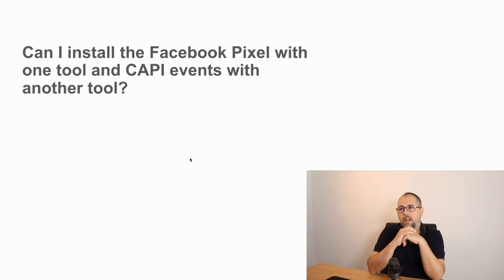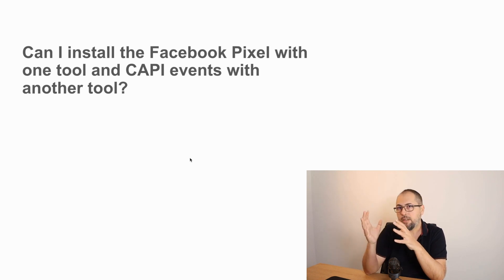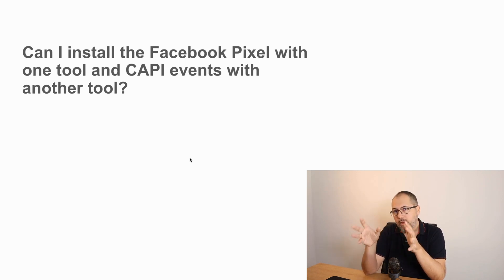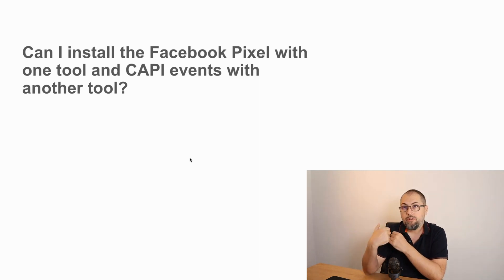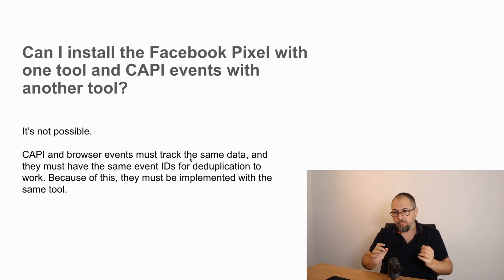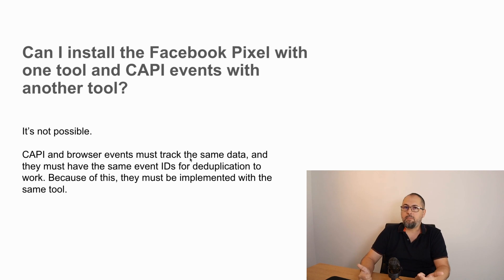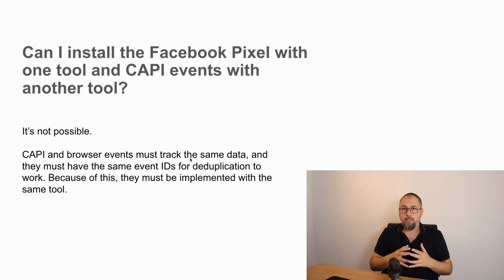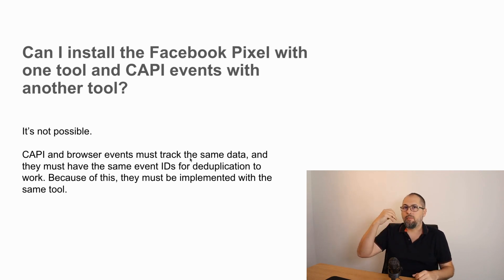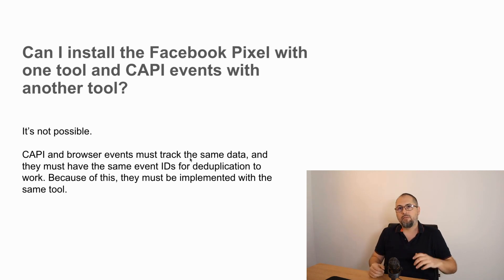Can I install the Facebook Pixel with one tool and Conversion API events with another tool? A lot of people ask: 'I have Google Tag Manager on my website and install the Facebook Pixel with it — can I use your plugin Pixel Your Site to add just Conversion API events?' This is not possible. A Conversion API event must track the same data, have the same event name, and send the same event ID as the Pixel events for deduplication to work. Because of this, they must be implemented with the same tool.